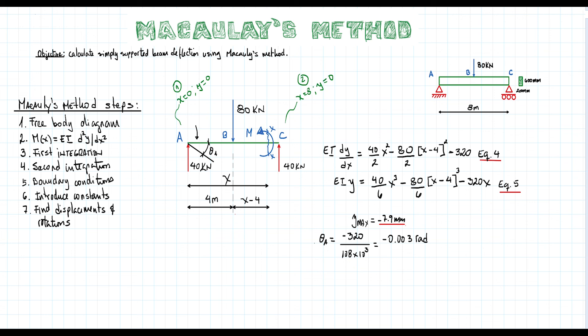I want to calculate the rotation at support C, but rest assured that the procedure is the same as the one applied for the support at A. If you give it a shot, you must get a rotation of plus 0.003 radians, which happens to be of the same absolute magnitude as the rotation at A, which is evident thanks to the symmetry conditions of the beam.